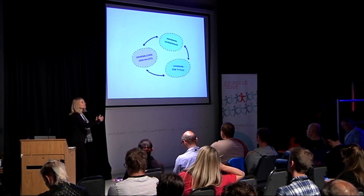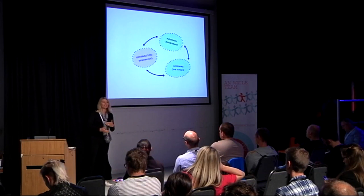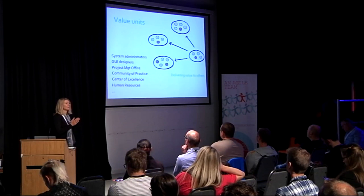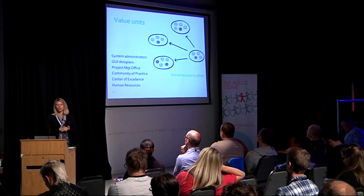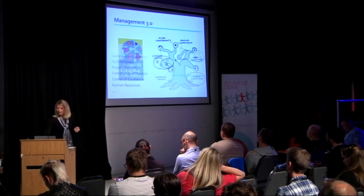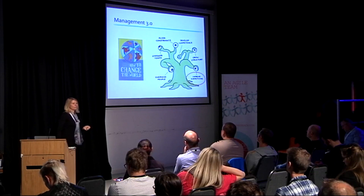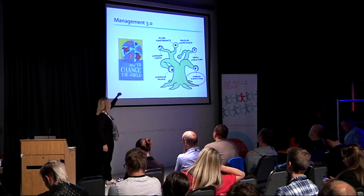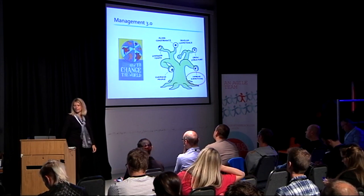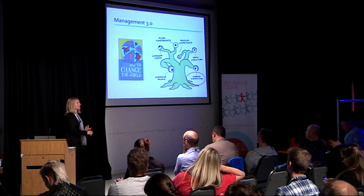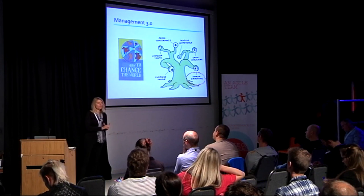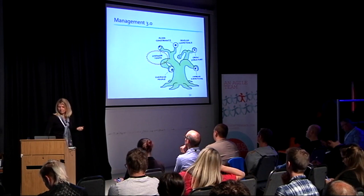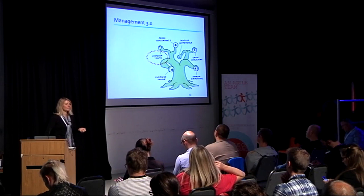Every team should be a value unit that delivers value to another unit. And the last one is improve everything, all of the time — this is nicely written in the 'How to Change the World' booklet, about change on a system level, individual level, environment level, and relationship level. So we're back to empowering teams, and we're going to play Delegation Poker, because I can see you're a little tired. Teams can self-organize — it requires empowerment, authorization, and trust. Agile software development works because of self-organizing teams.